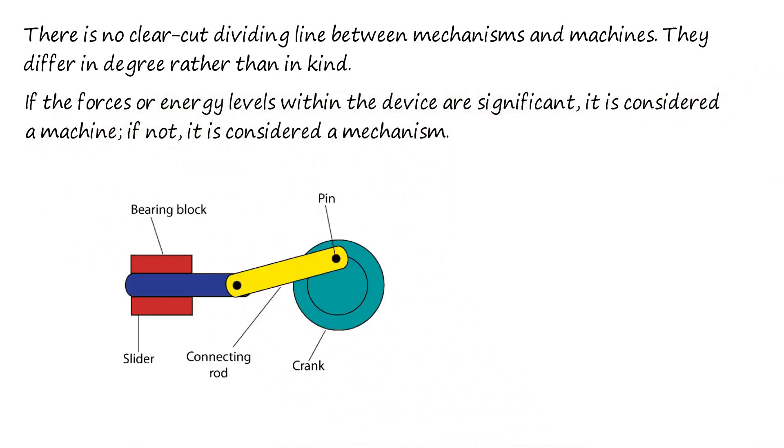For example, a slider crank mechanism converts reciprocating motion of a slider into rotary motion of crank or vice versa. However, when it is used as an automobile engine by adding valve mechanism, it becomes a machine which converts the available energy force on the piston into the desired energy torque of the crankshaft. This torque is used to move a vehicle.